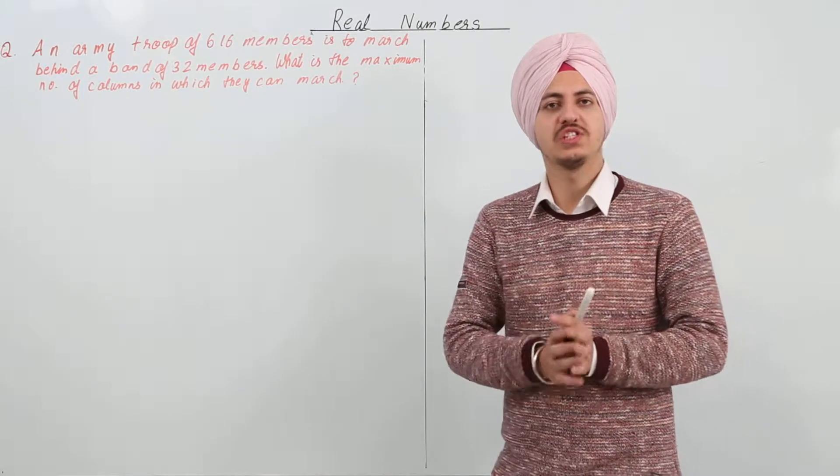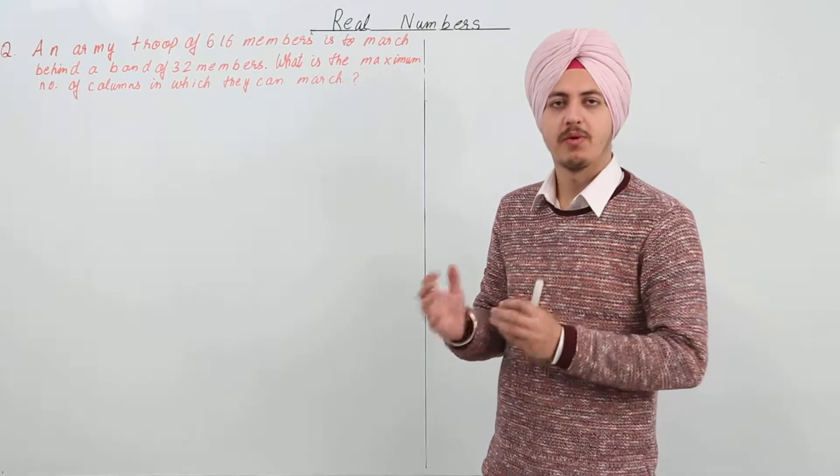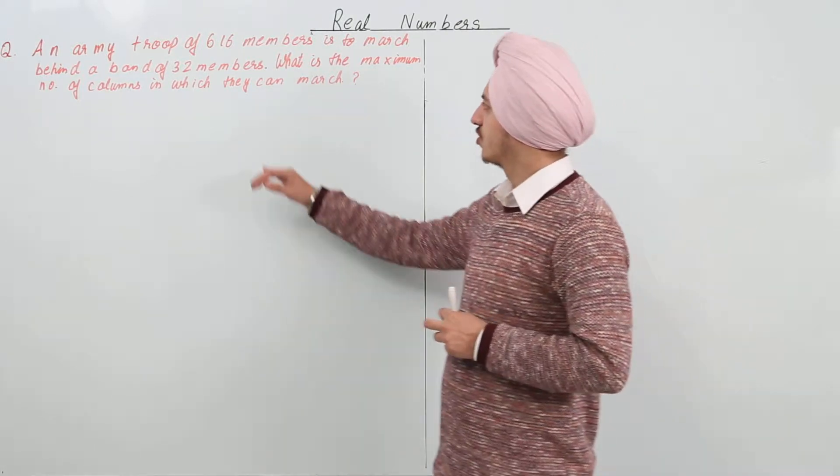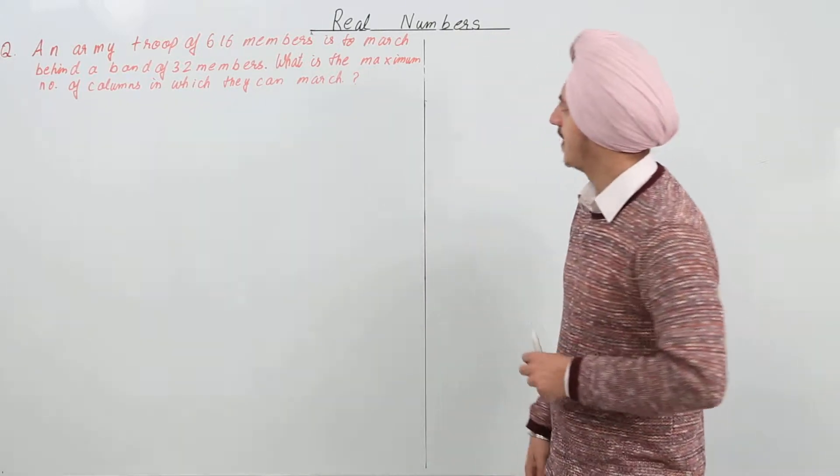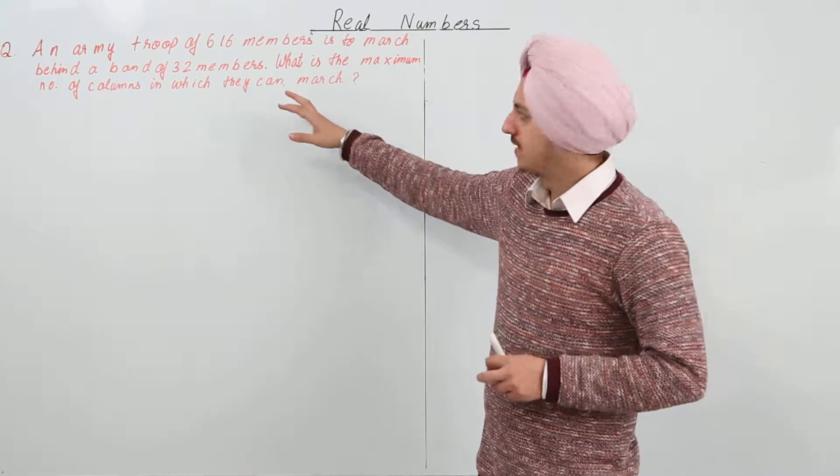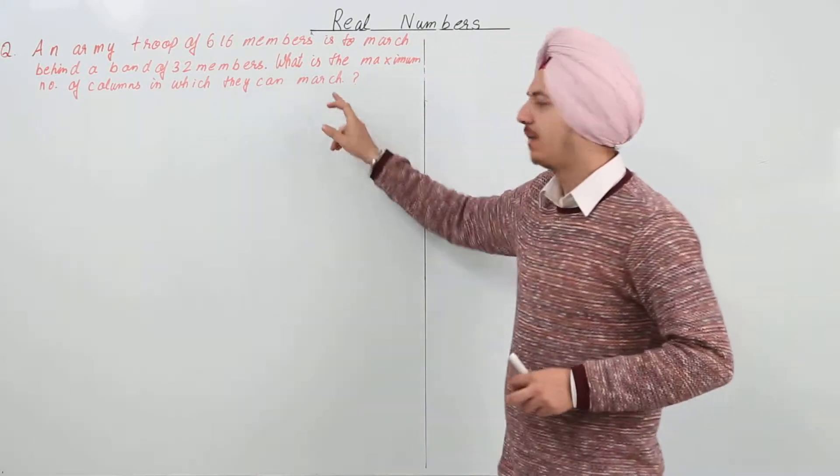So what are the types of questions that you have to solve by the HCF method? This question says an army troop of 616 members is to march behind a band of 32 members. What is the maximum number of columns in which they can march?